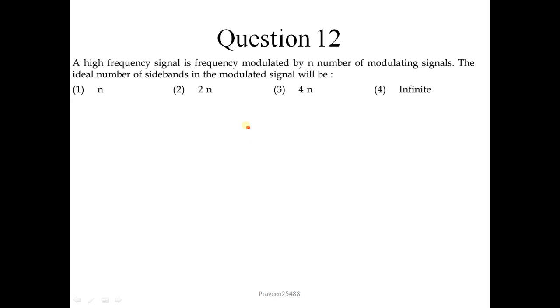Question number 12: A high frequency signal is frequency modulated by n number of modulating signals. The ideal number of sidebands in the modulated signal will be. You know that there will be infinite number of sidebands and most energy stored in the sideband which is near to the center frequency. So our correct answer is 4.